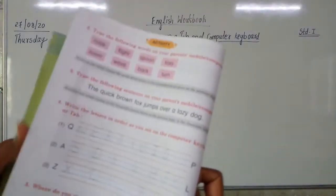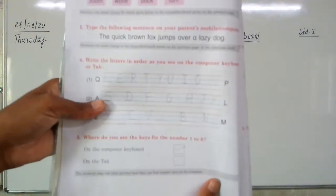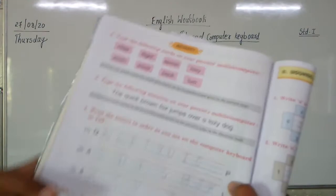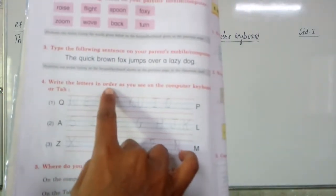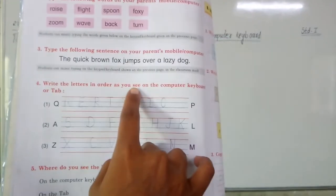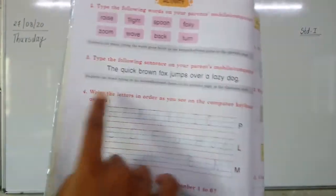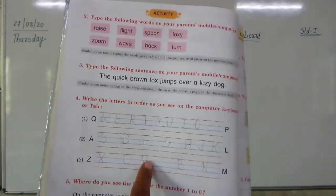After that you have to turn your page to page number 16. You have to remove page number 16. In that there is Question number 4: Write the letters in order as you see on the computer keyboard or tab. We are going to do this.